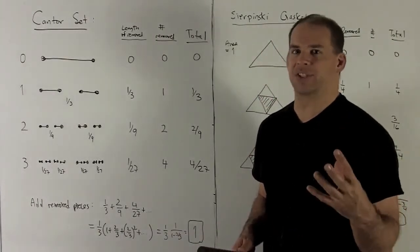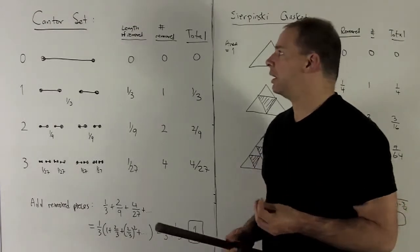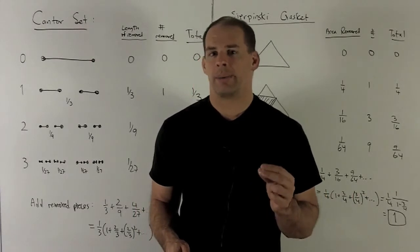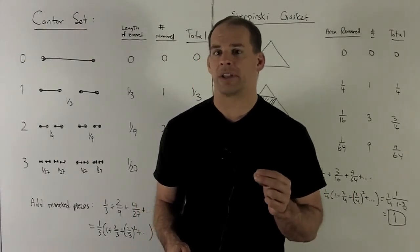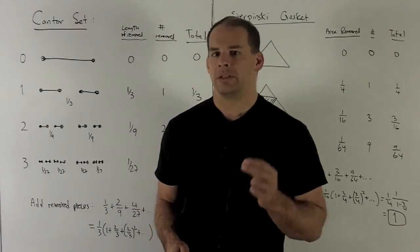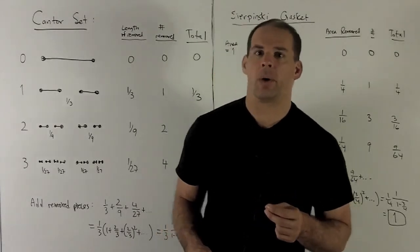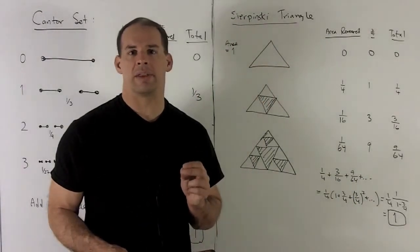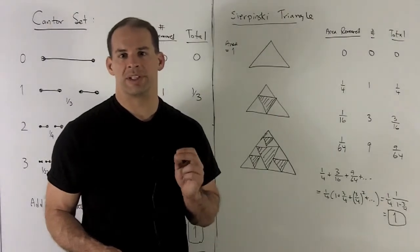So somehow I've created a set with an infinite number of points but with no length, no mass to it at all. The Cantor set has a lot of other interesting properties which are probably a little bit beyond the scope of a calculus class, but definitely keep an eye out for them if you keep going. Let's take a look at the two-dimensional analog of the Cantor set: the Sierpinski triangle.